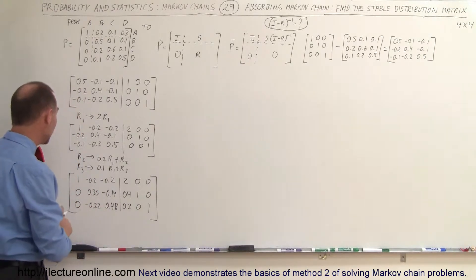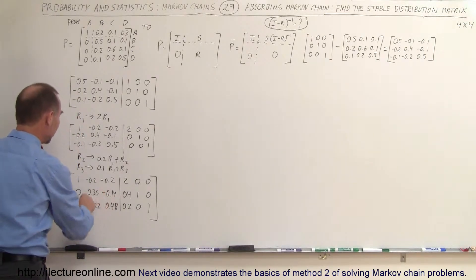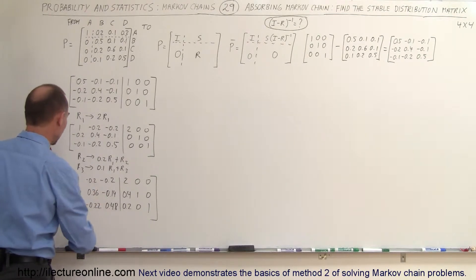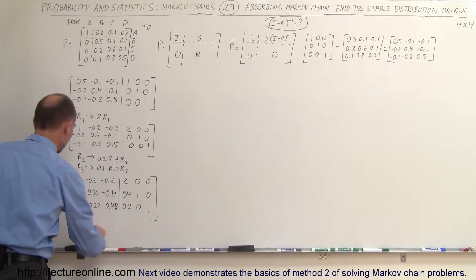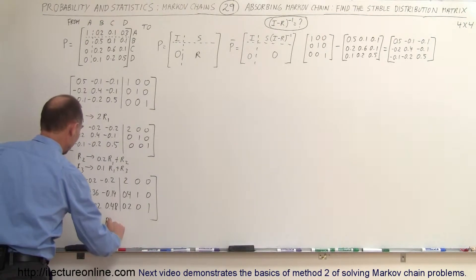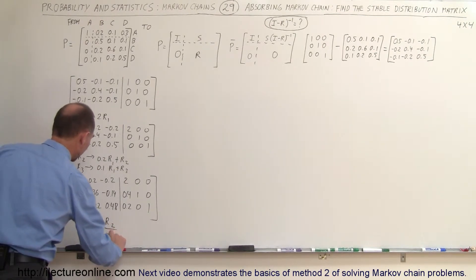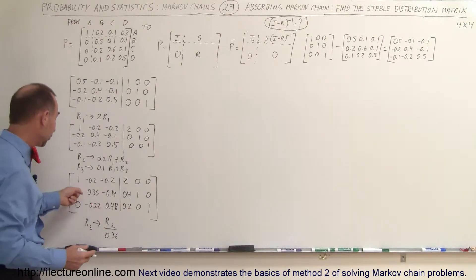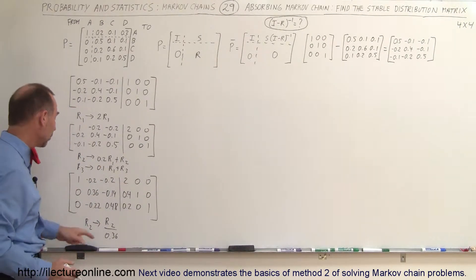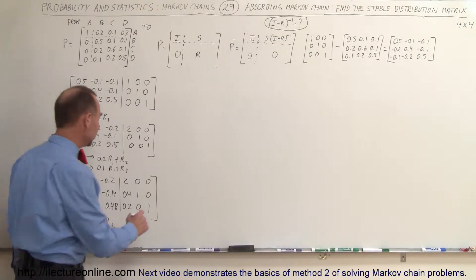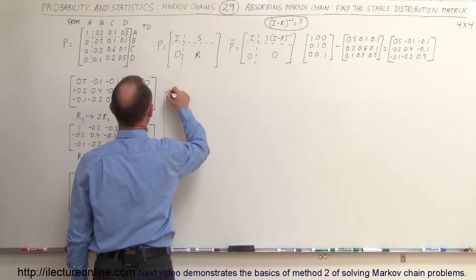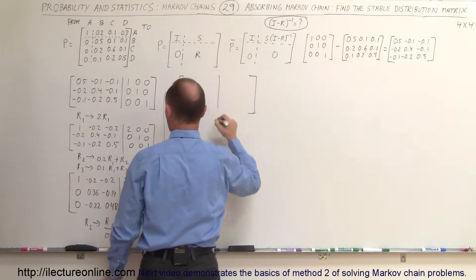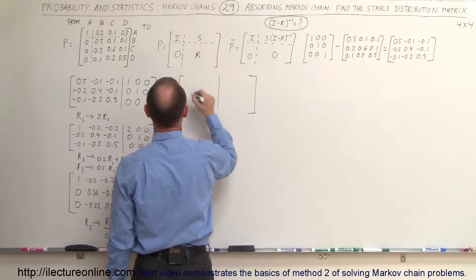Now the next thing we're going to do is turn this entry into a 1. The first column is taken care of; now we need to turn the row 2 pivot into a 1. To accomplish that we take row 2 and replace it by row 2 divided by 0.36. If we divide 0.36 by 0.36 we get 1. Of course we need to divide everything else in that row by 0.36. Row 1 and row 3 do not change.